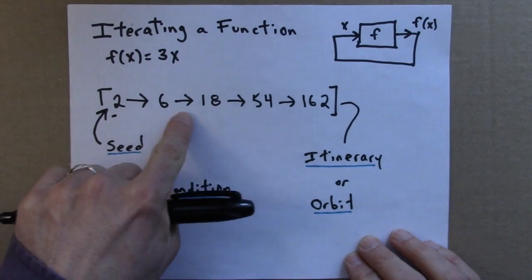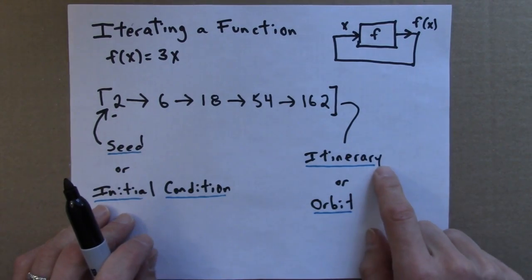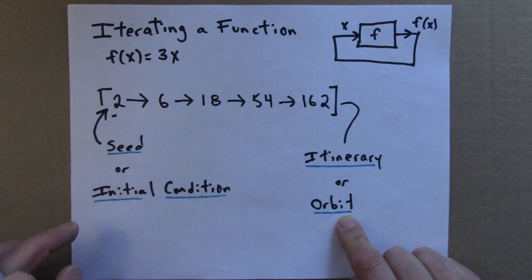So I would say that this sequence of numbers, continuing on, is the itinerary or orbit for the seed 2.